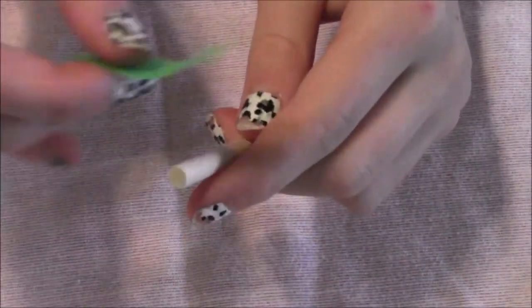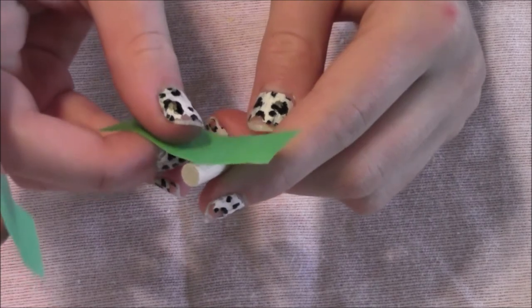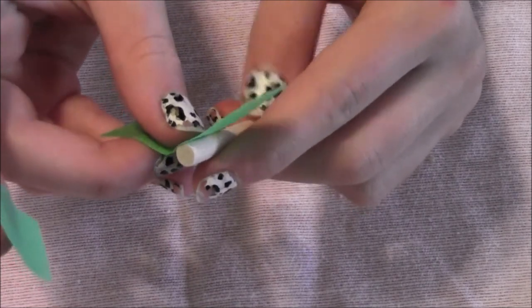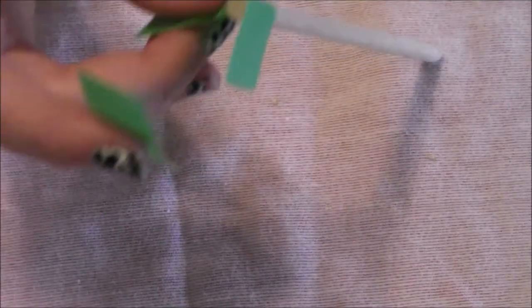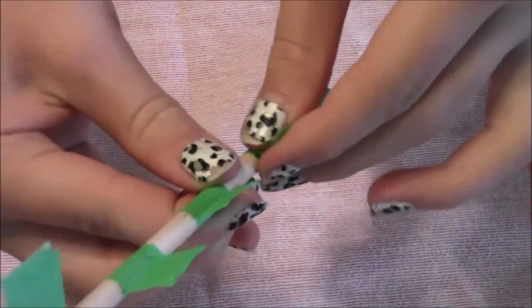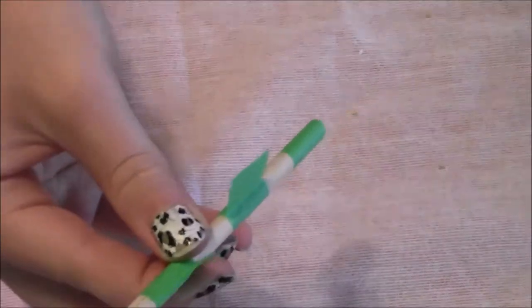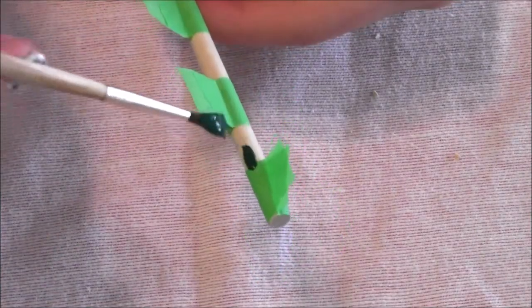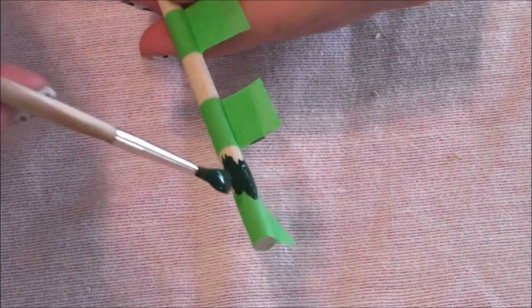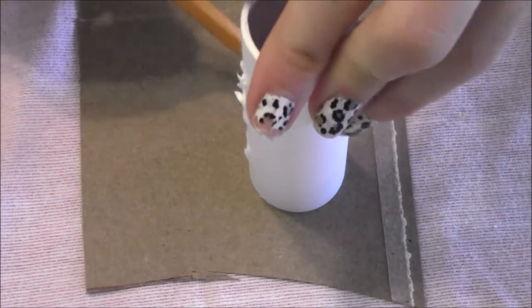Then we're going to turn these wooden dowels into trot poles. So you could paint them all one color, you could leave them how they are, or you could use some tape to create equal distance stripes. Then you're going to paint in between the tape. It's okay if you go on the tape, I would just brush away from the tape so you don't get it under.